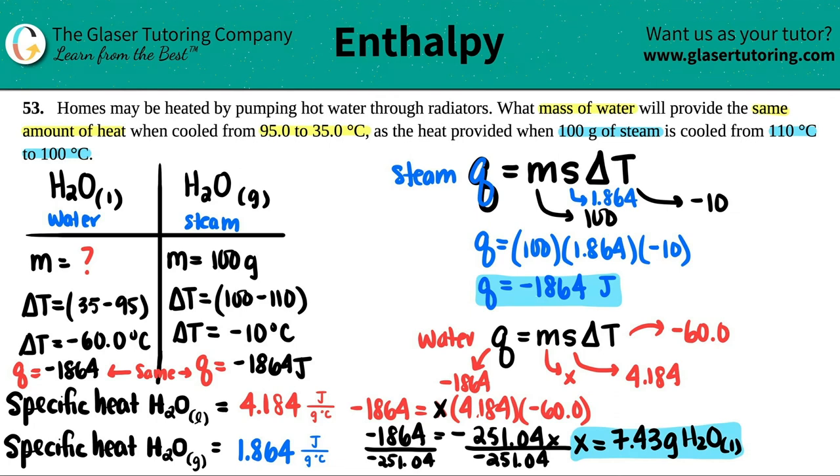This means 7.43 grams of water must be cooled from 95 to 35 to produce the same amount of heat as 100 grams of steam. Much less water than steam - that's what they wanted you to see. Thank you so much, I really hope this helped. Subscribe to the channel. Keep studying hard, you guys got this. Take care!